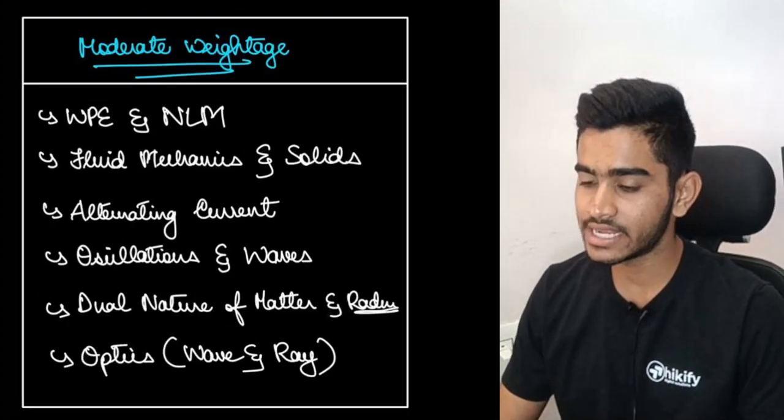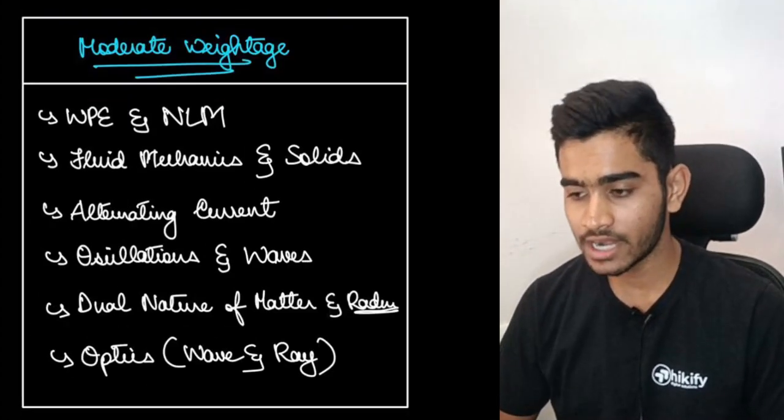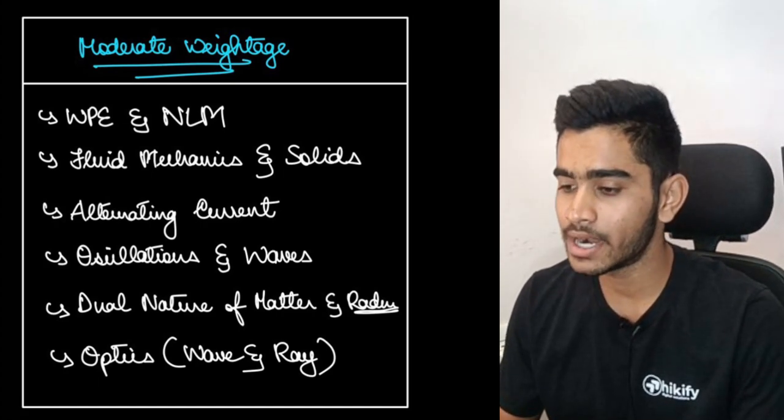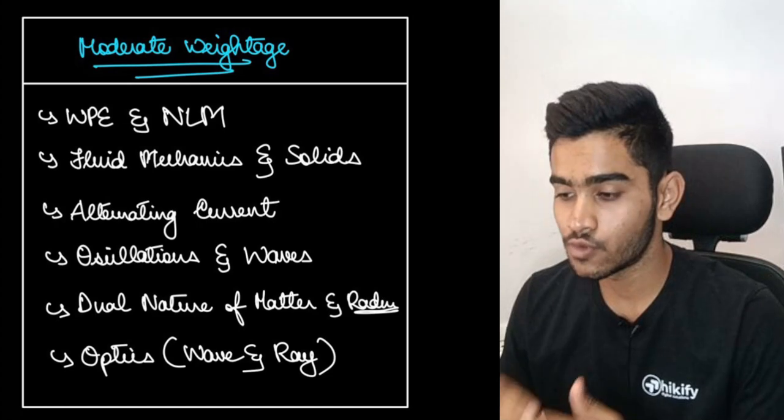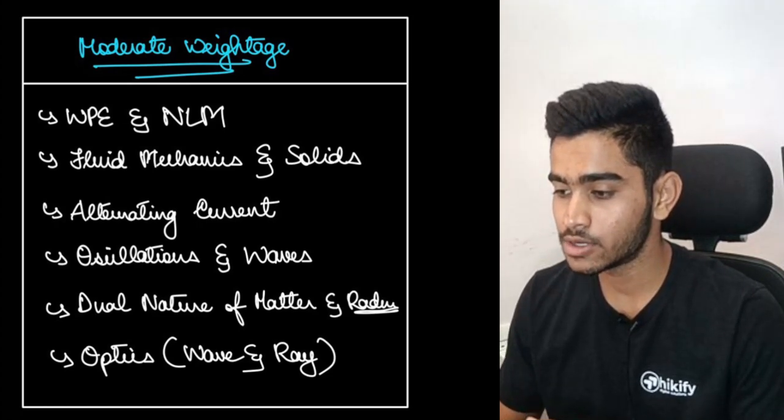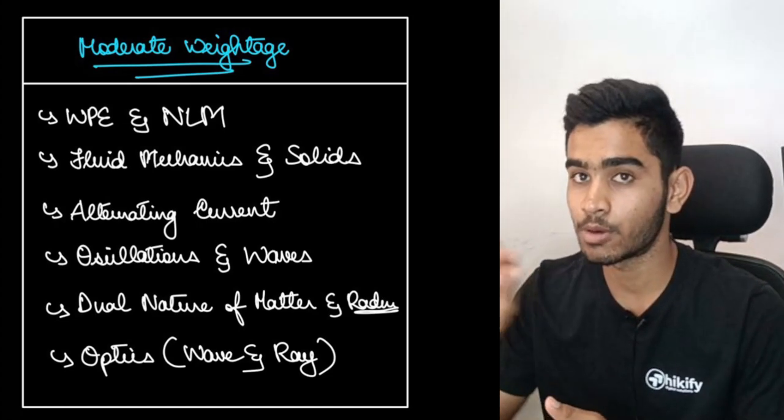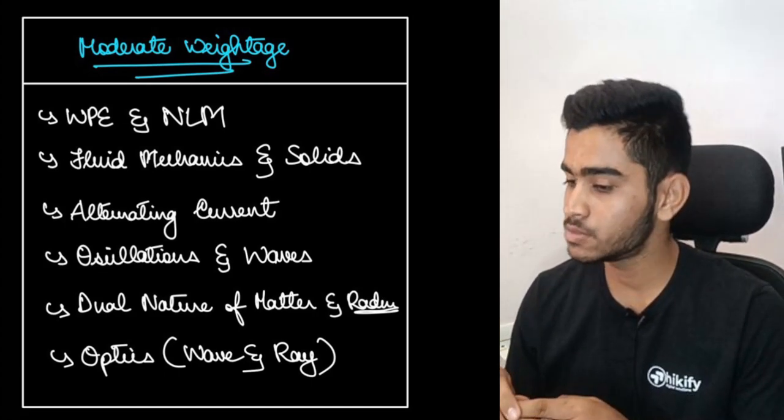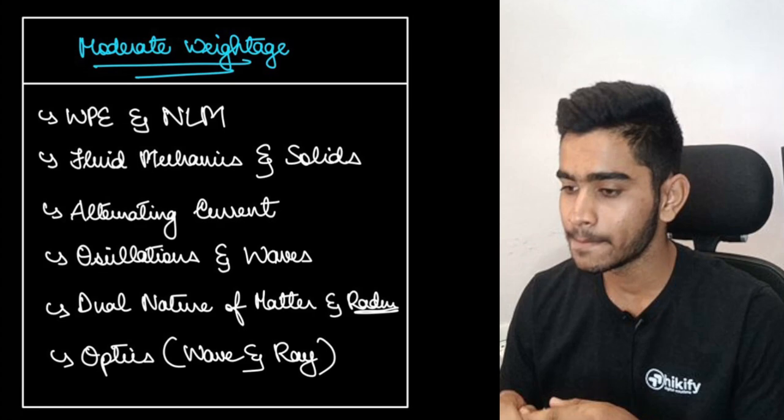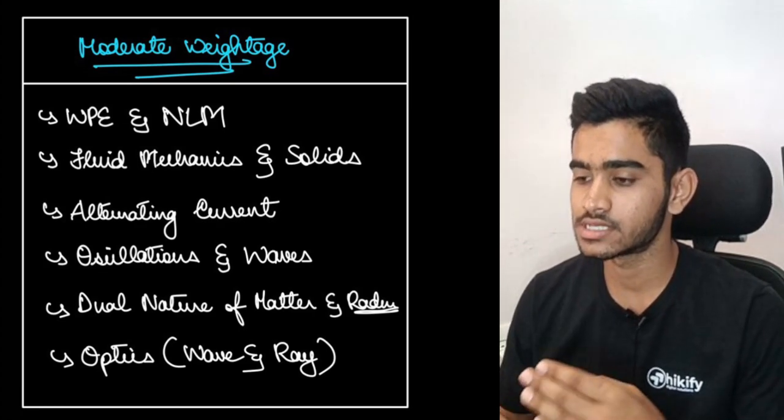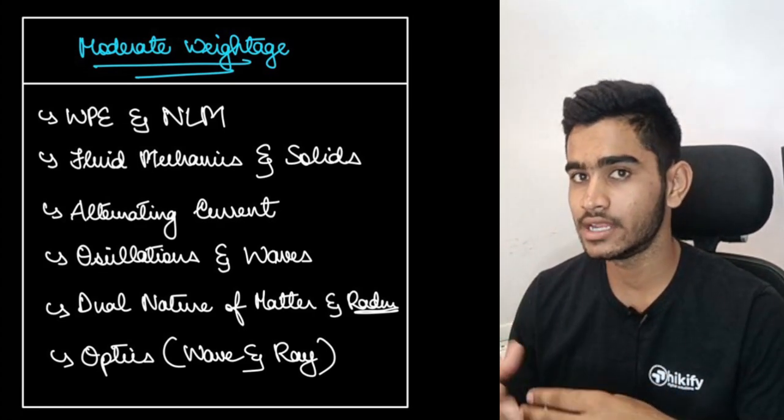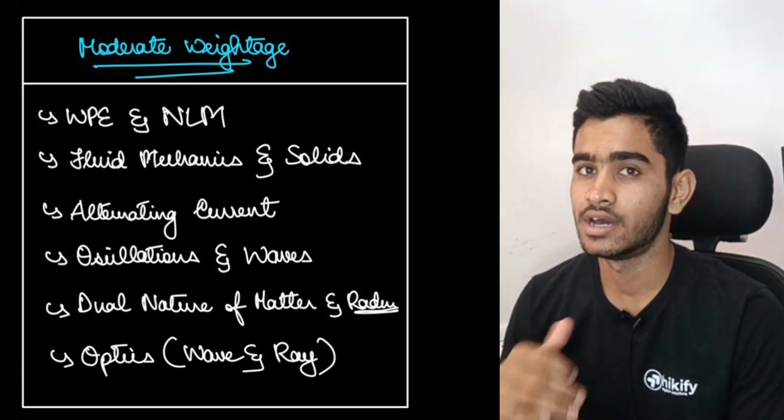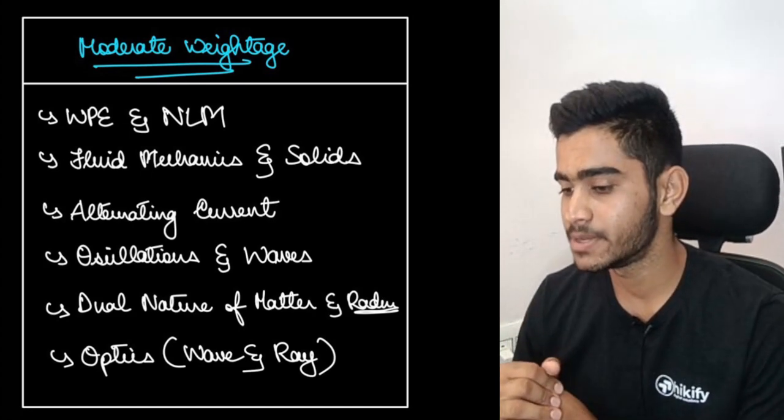Next talking about the moderate weightage chapters. First in line in your moderate weightage chapters is work power energy and Newton's laws of motion which again come under your 11th part and next comes fluid mechanics and solids. So you will be able to see these in form of mechanical properties of solids and mechanical properties of fluids in your NCERT textbook. So go through it correctly and moderate weightage chapters in an average contain or comprise around 2 to 3 questions in your KCET examination or at least 2 questions in your KCET examination.